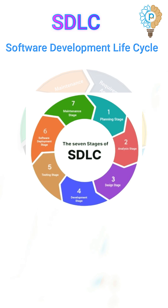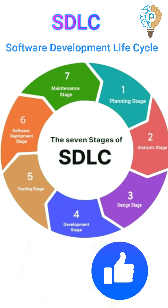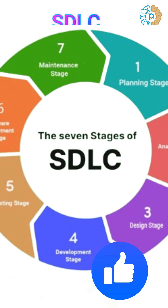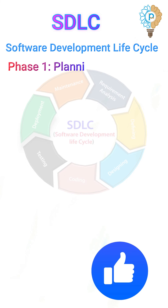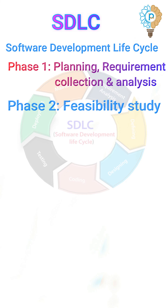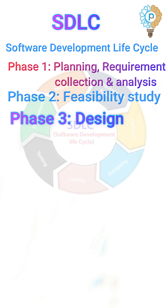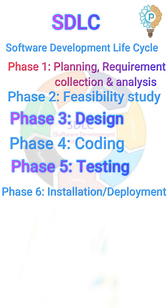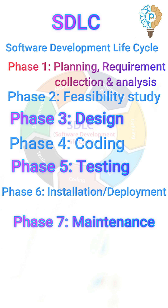The SDLC model involves seven phases or stages while developing any software: Phase 1, Planning, Requirement Collection and Analysis. Phase 2, A Feasibility Study. Phase 3, Design. Phase 4, Coding. Phase 5, Testing. Phase 6, Installation Deployment. Phase 7, Maintenance.